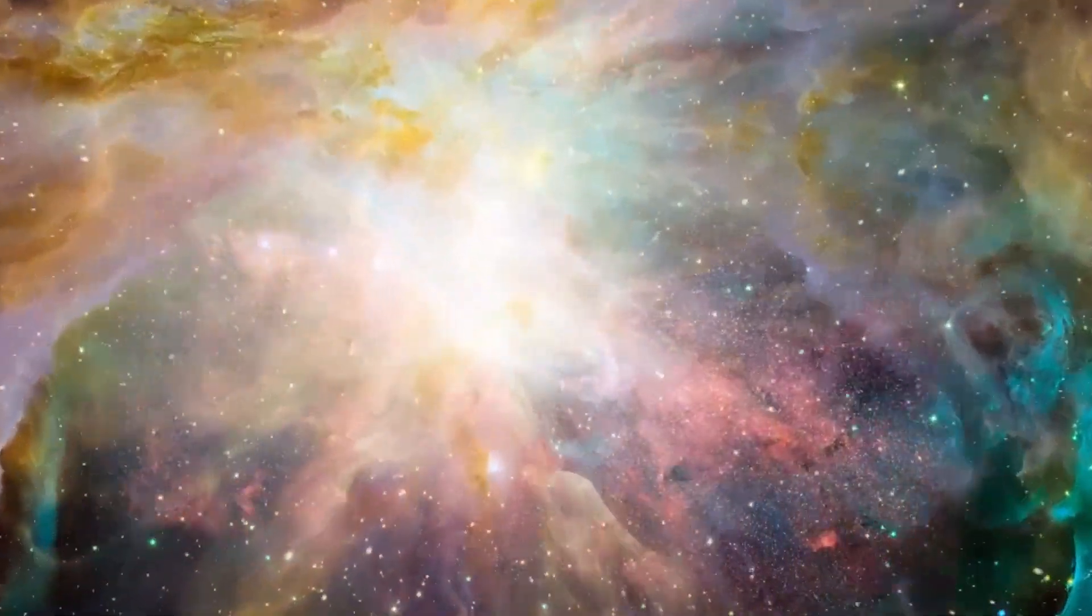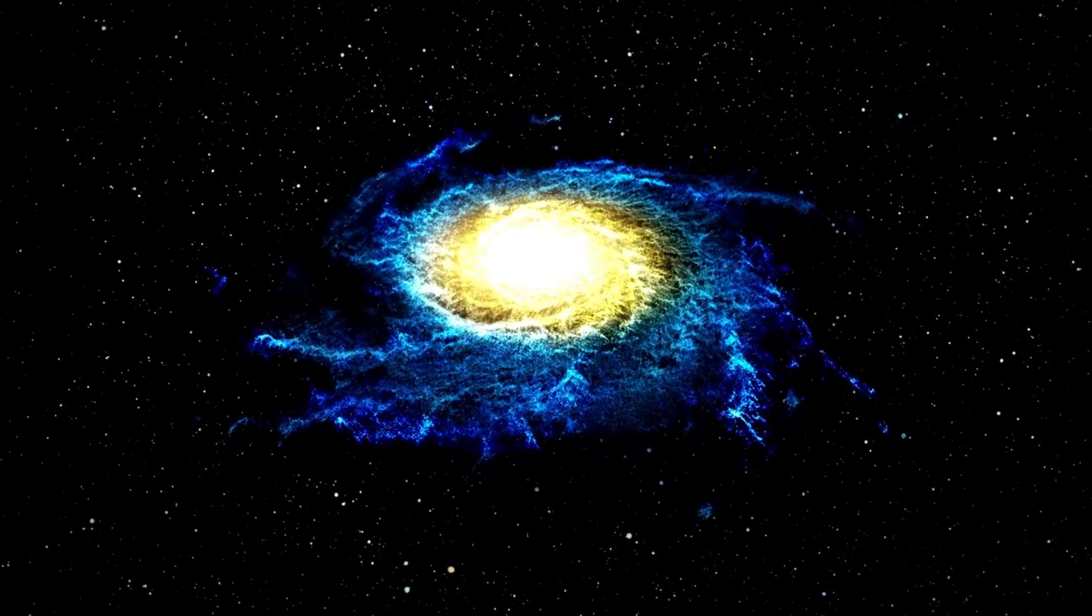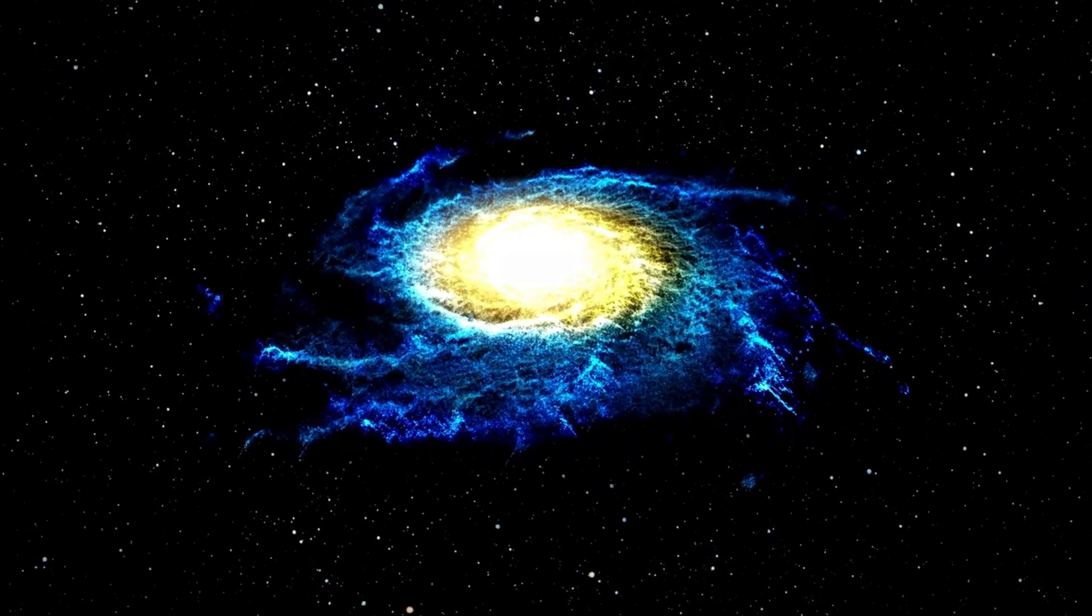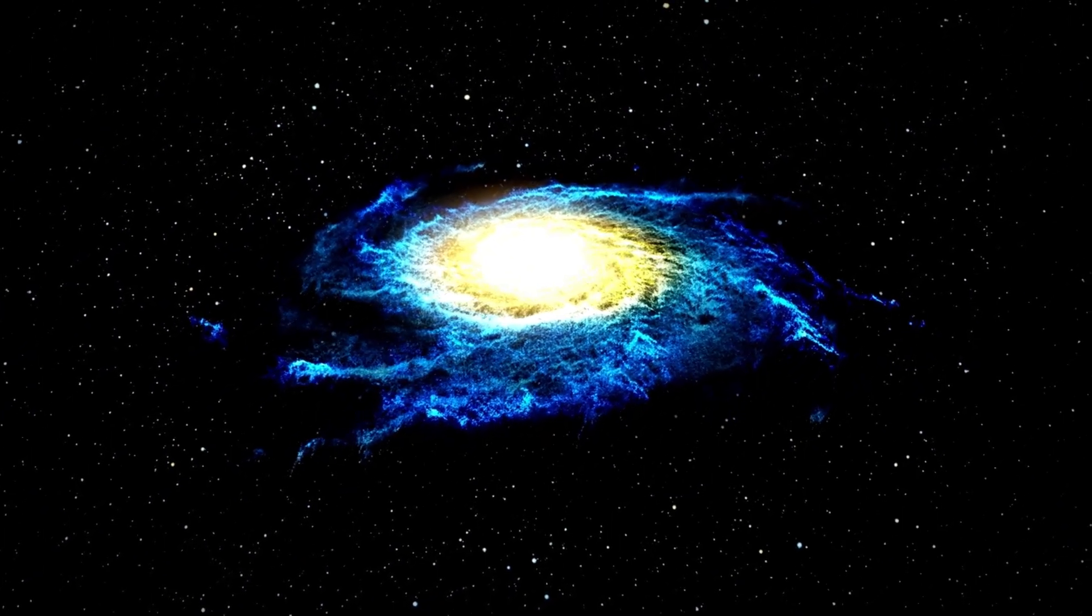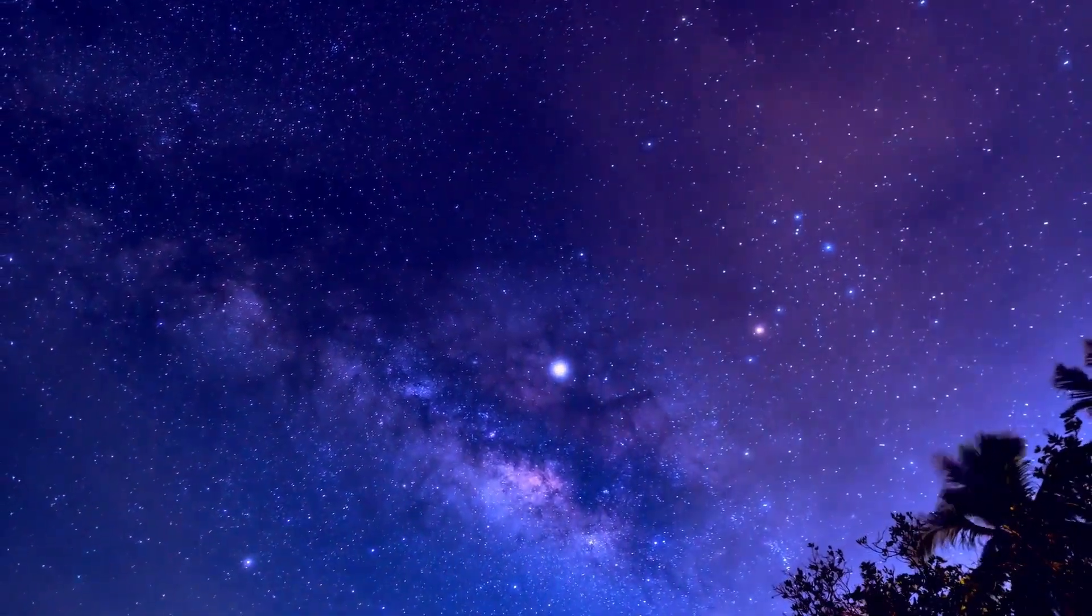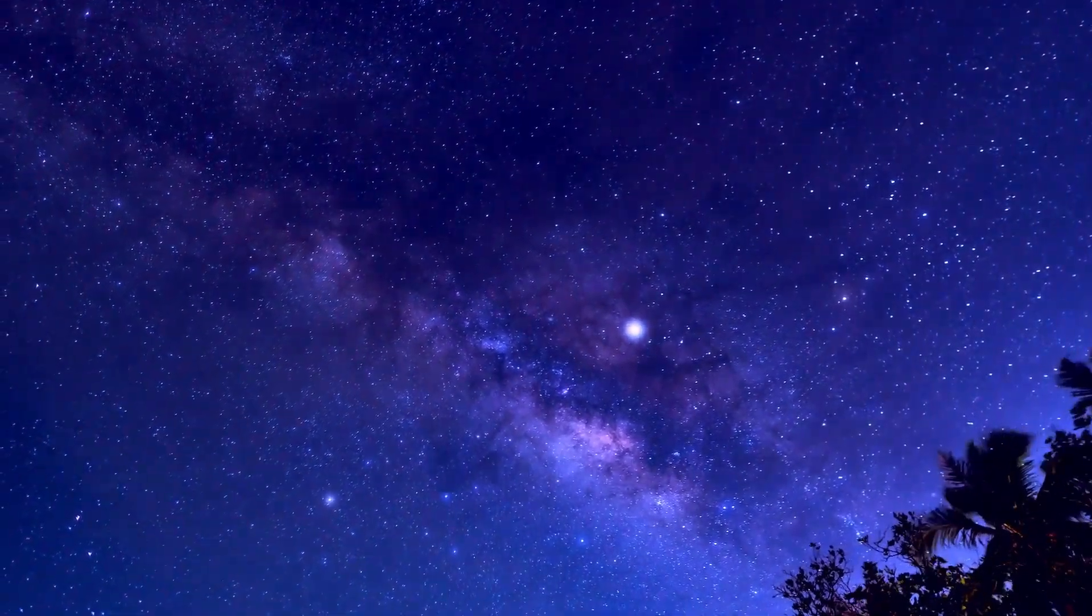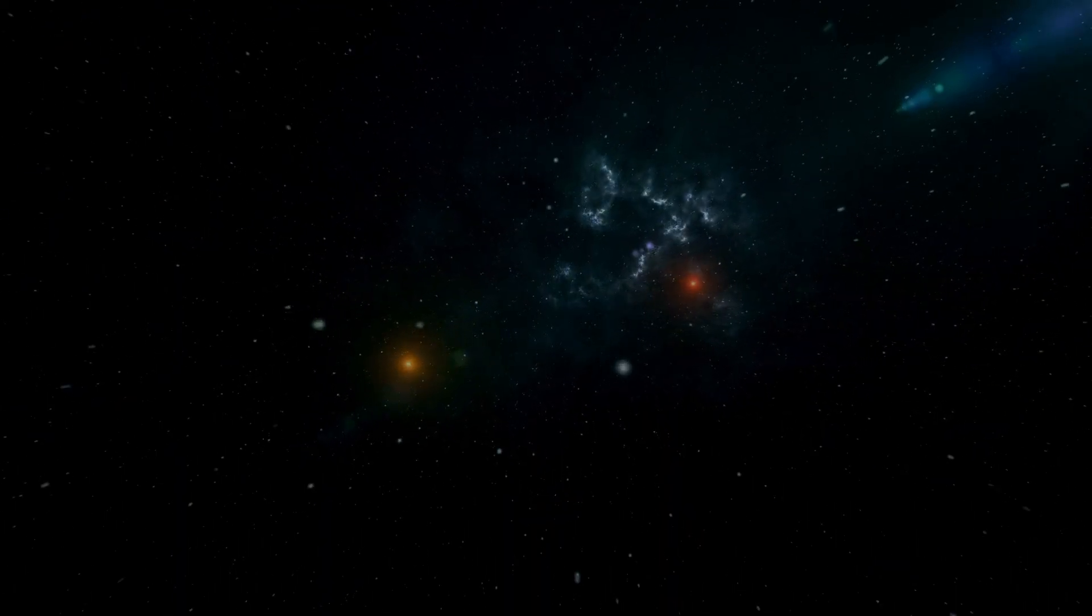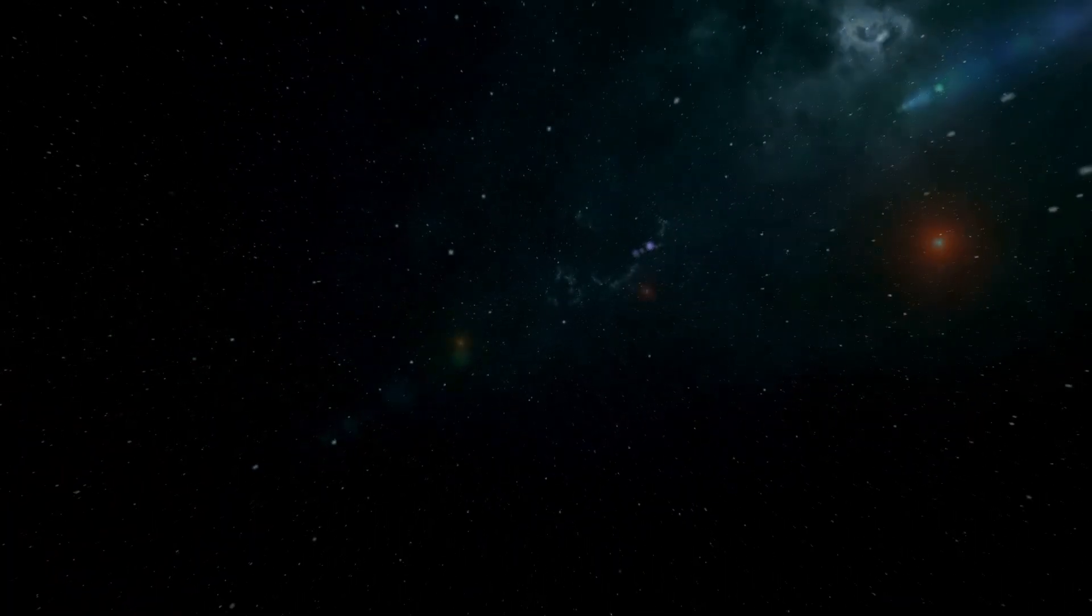Betelgeuse loses about one solar mass every 10,000 years. The red star is surrounded by a nebula because this material is being ejected unevenly from the star in all directions. A cloud of material 250 times larger than the star surrounds Betelgeuse. The size of this nebula is also thought to be 30 astronomical units, or 30 times the solar distance between the Sun and Neptune, the furthest planet in the solar system.